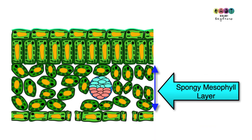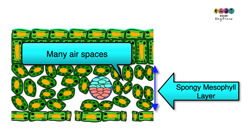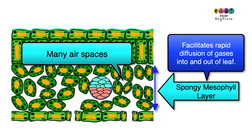In the spongy mesophyll layer you can see many spaces between those irregular shaped cells. This is to ensure the rapid diffusion of gases — gases essential to photosynthesis, such as carbon dioxide, need to get to the cells, and oxygen needs to be released.